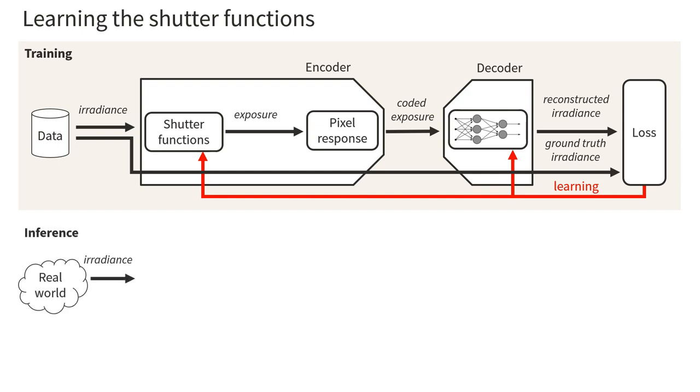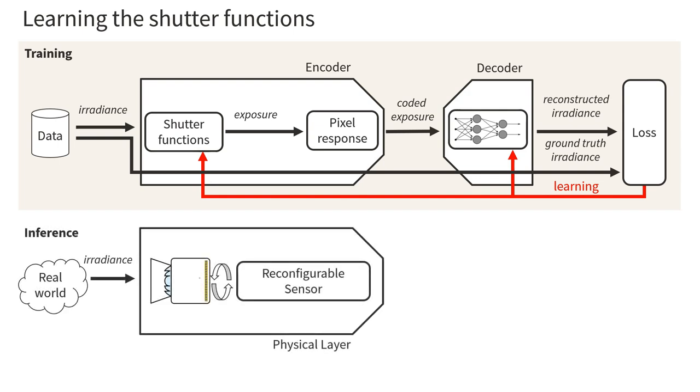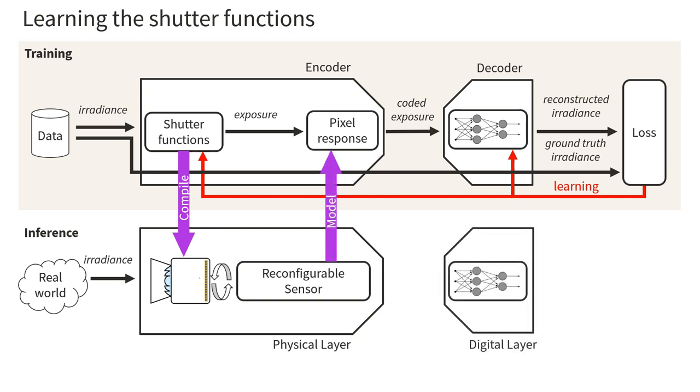For real-world capture, the real-world scene is captured by a reconfigurable sensor on which the learned shutter functions have been compiled. Because the pixel response of our encoder models the real sensor, we are able to copy the decoder learned in simulation to work along the real-world sensor to transform the coded exposures in the irradiance.